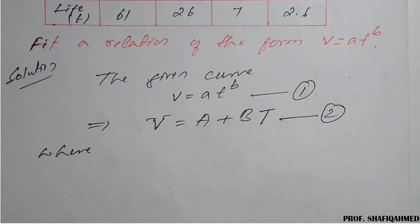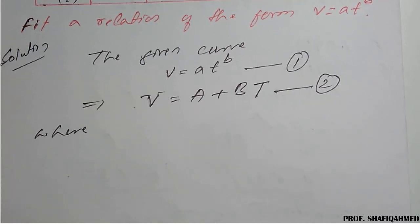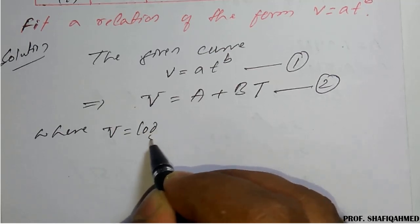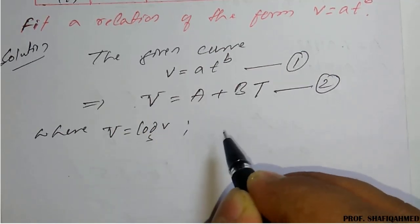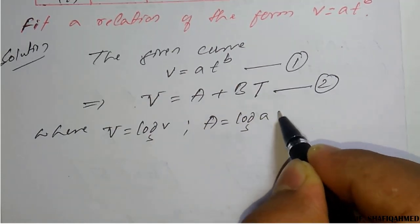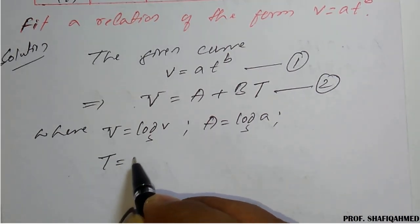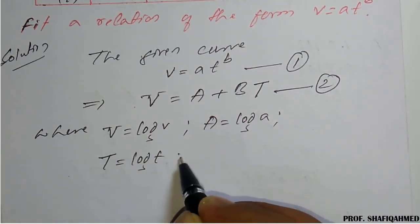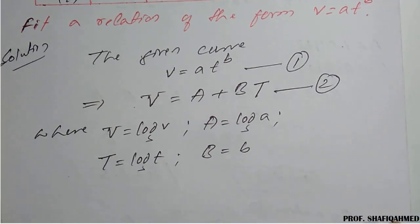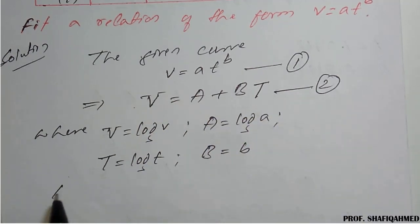In this linearized form, capital V = log(v), capital A = log(a), capital T = log(t), and capital B = b. We need to prepare normal equations corresponding to equation 2.